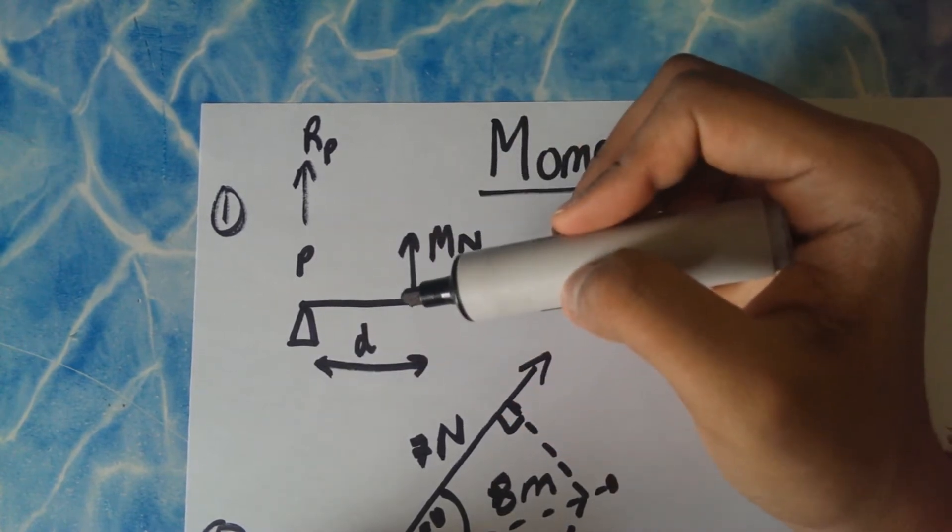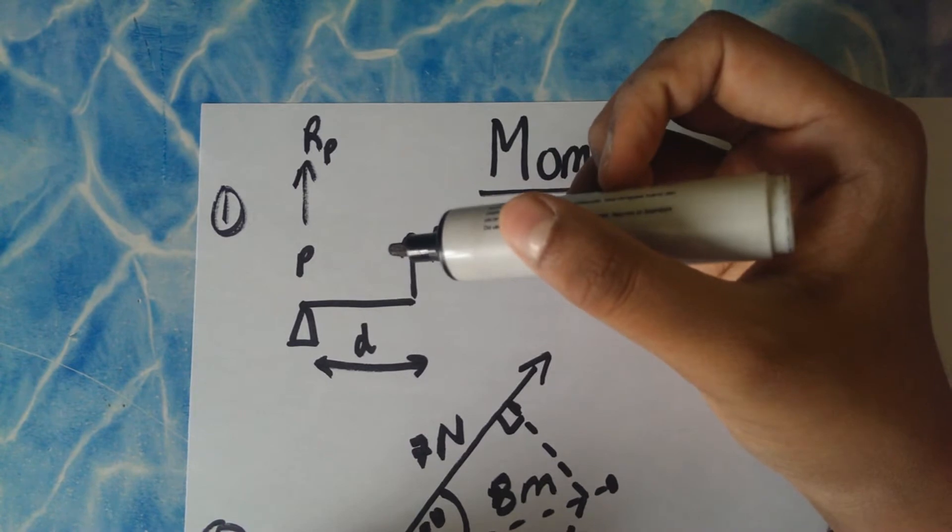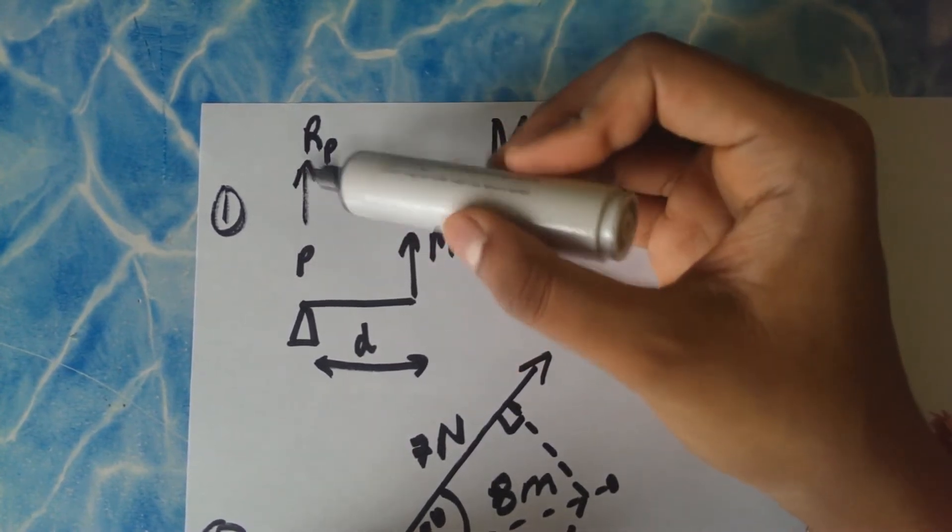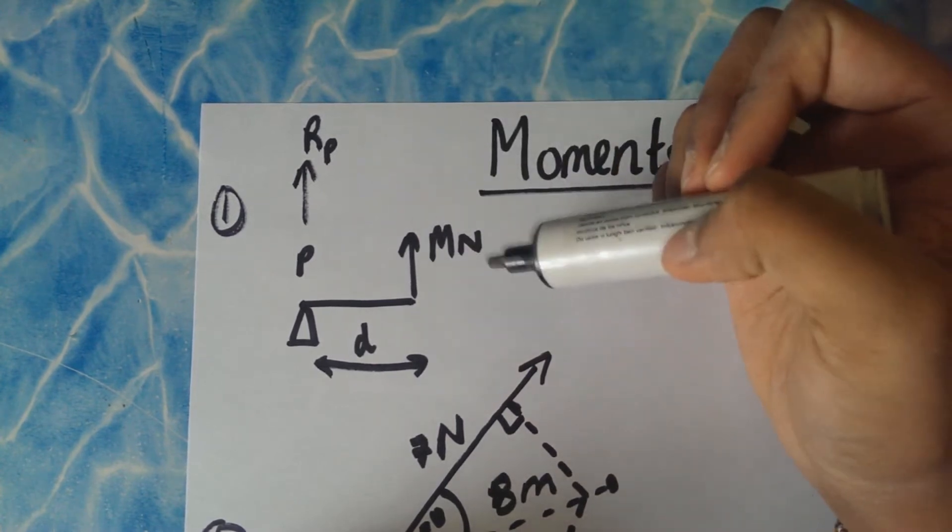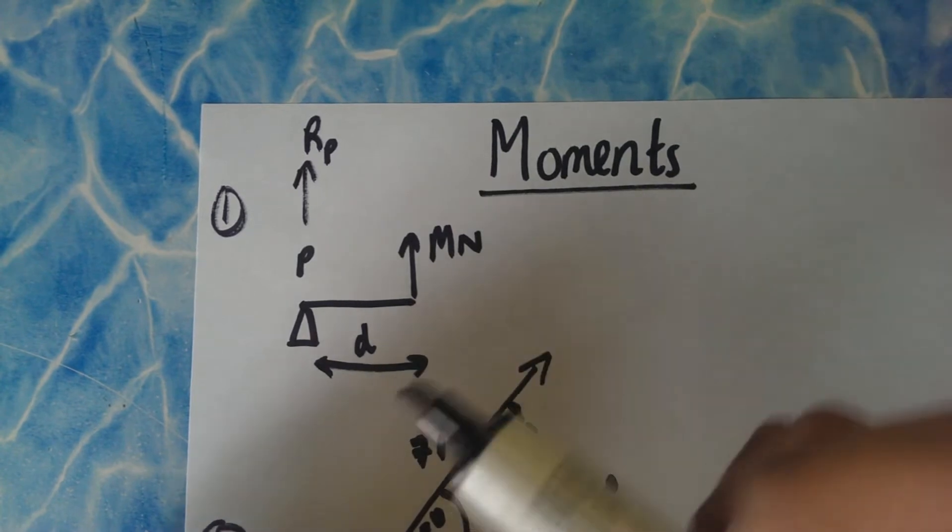But another thing to consider is that all forces in all directions must equal. So obviously in this example there's RP acting up, M N acting up, and there's no downward force. So this object, this system sorry, can't be in equilibrium.